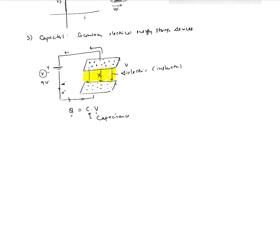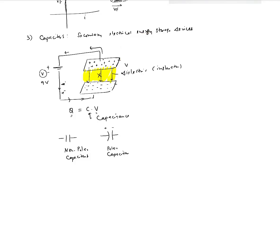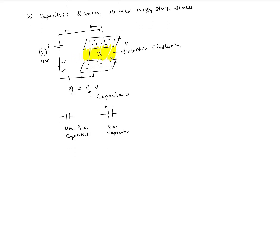The symbol for a capacitor is basically two bars — this is for the nonpolar capacitors. You also have polar capacitors. Polar capacitors have a curved line and a straight line: the curved line is the positive side and the straight line is the negative side. Just as diodes are polar and have a positive and negative side, polar capacitors also have polarity. Polar capacitors typically have a larger capacity to store charge. Whether nonpolar or polar, their use in analytical circuits is similar.